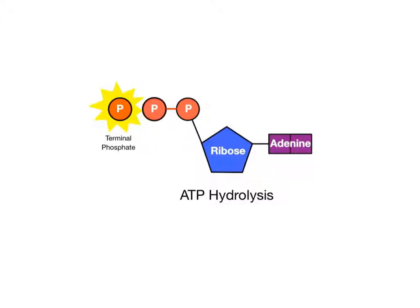To transfer energy from ATP, the terminal, or last phosphate group, is removed through a spontaneous hydrolysis reaction. This involves the addition of a water molecule and an initial investment of energy. However, after the reaction runs through completion, there is actually a net release of free energy that can be used by the cell to fuel energy-demanding processes.